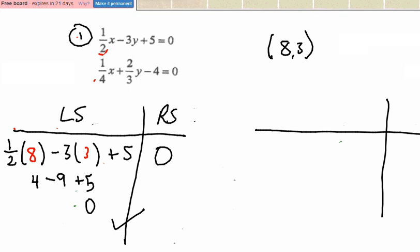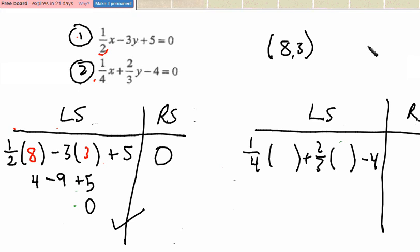And now I'm going to do the same thing for the second equation. So here's equation 2. So I'm going to do 1 quarter of x plus 2 thirds of y minus 4 on the left and 0 on the right. And I'm checking to see if 8, 3 satisfies the left side right side balance.